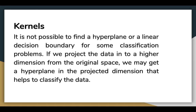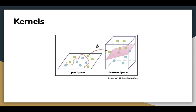SVM algorithms use a set of mathematical functions that are defined as the kernel. Sometimes it is not possible to find a hyperplane or a linear decision boundary for some classification problems. If we project the data into a higher dimension from the original space, we may get a hyperplane in the projected dimension that helps to classify the data. As shown in the figure, it is impossible to find a line to separate the two classes — green and blue — in the input space. But after projecting the data into a higher dimension, we were able to classify the data using a hyperplane.